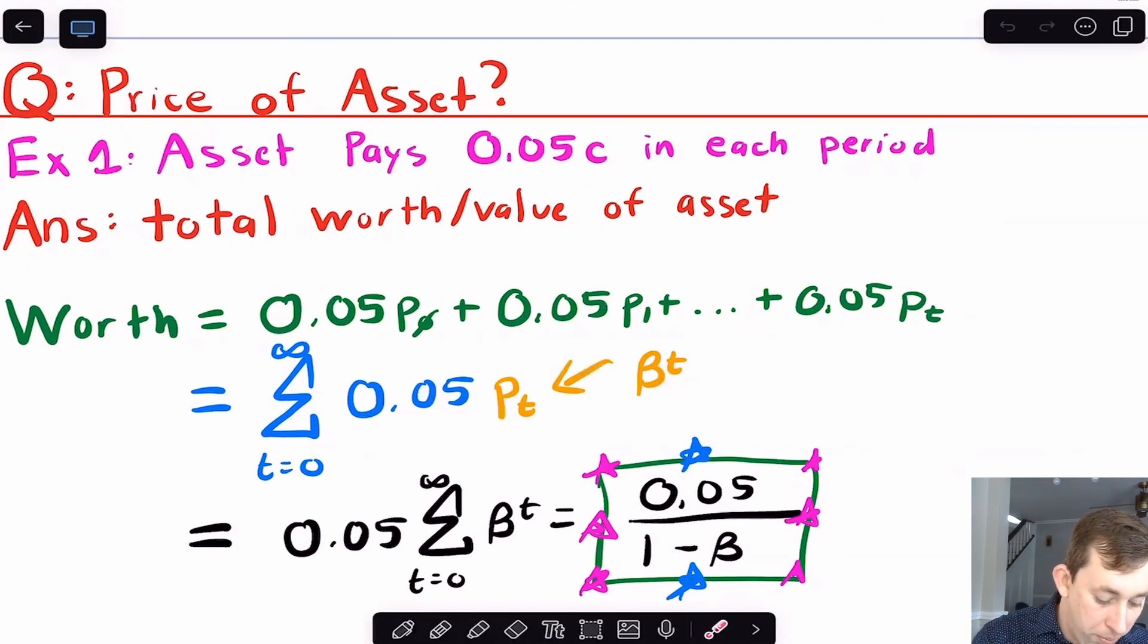It's worth 0.05 coconuts in every period. If I take 0.05 and multiply it by the price in every period, the pt is just going to be beta to the t, so I'm going to put that into a summation. I'm going to solve using the metric that the summation of beta to the t is one over one minus beta. I get that my maximum willingness to pay is 0.05 over one minus beta.